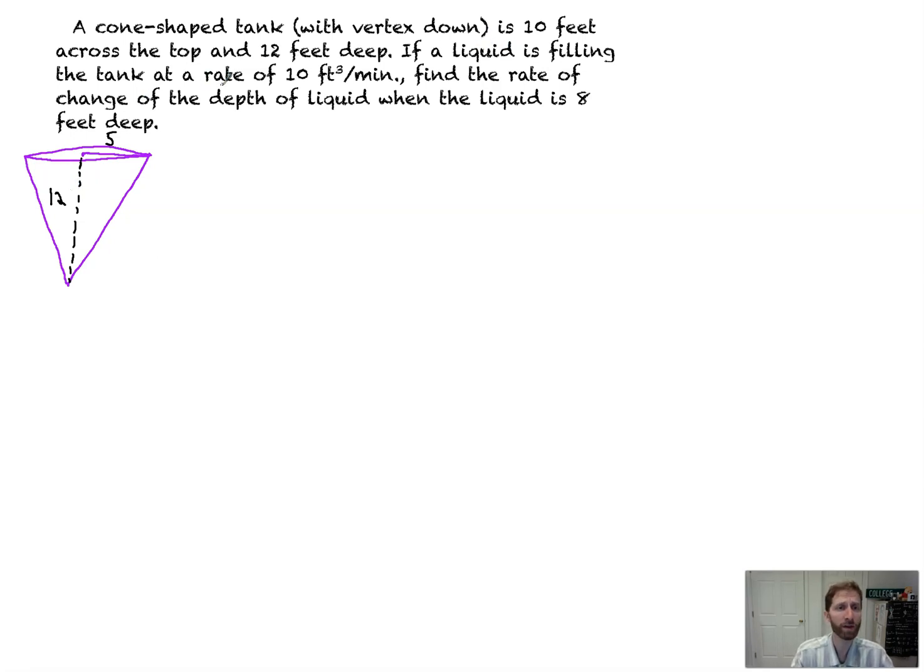If a liquid is filling the tank at a rate of 10 feet cubed per minute, okay, so now we've got cubic feet, which right away tells us that we're talking about volume. So I'm going to immediately call it my volume formula for a cone, which is pi over 3 or 1/3 pi r squared h. Now, if you don't know that formula and your teacher wants you to memorize it, fine. On the AB or BC exams, they won't ask you to memorize it. They'll provide it for you.